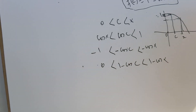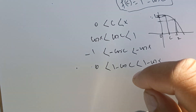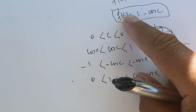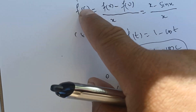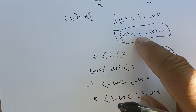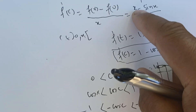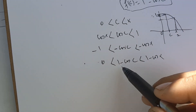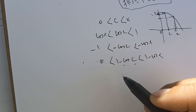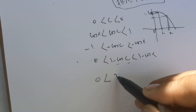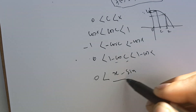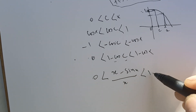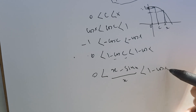Now, f'(C) equals 1 minus cosine(C), which also equals (x minus sine(x)) over x. So this gives us (x minus sine(x)) over x is less than or equal to 1 minus cosine(x).